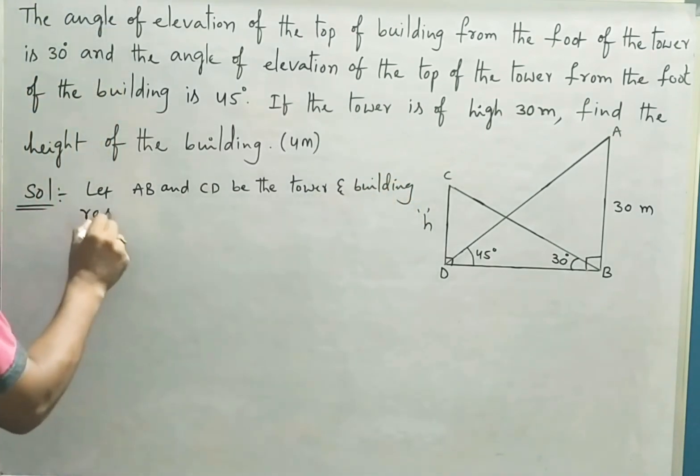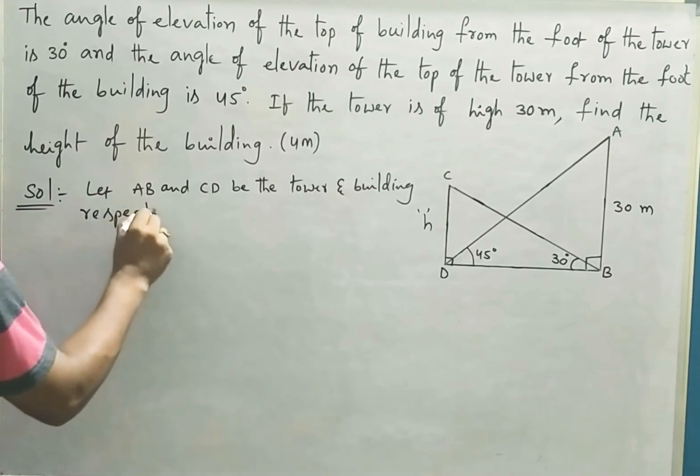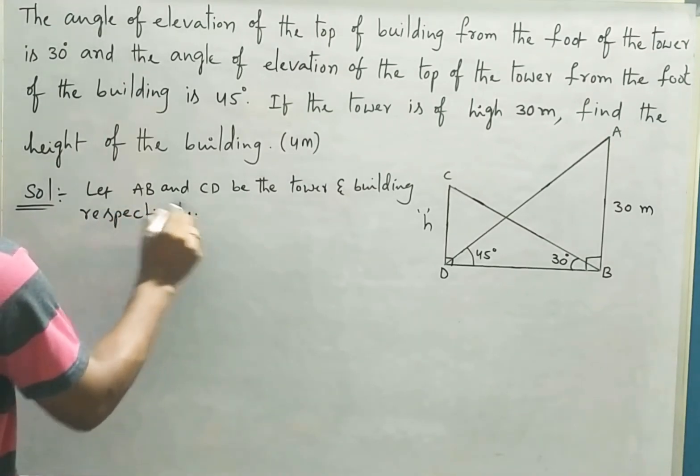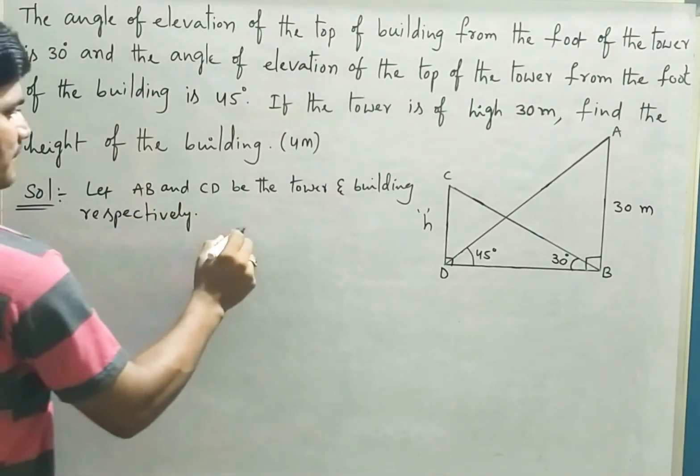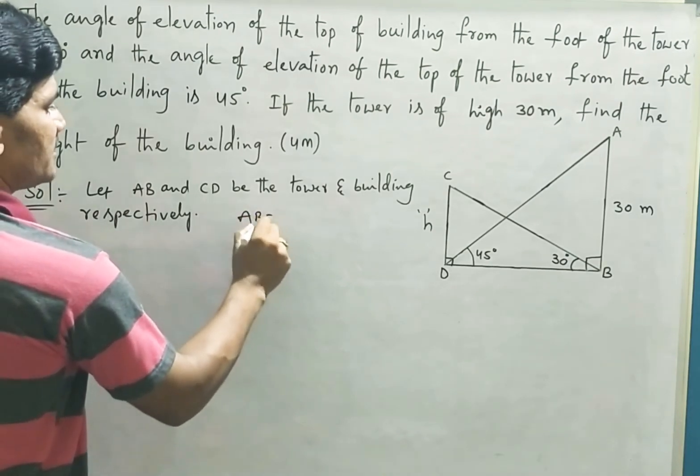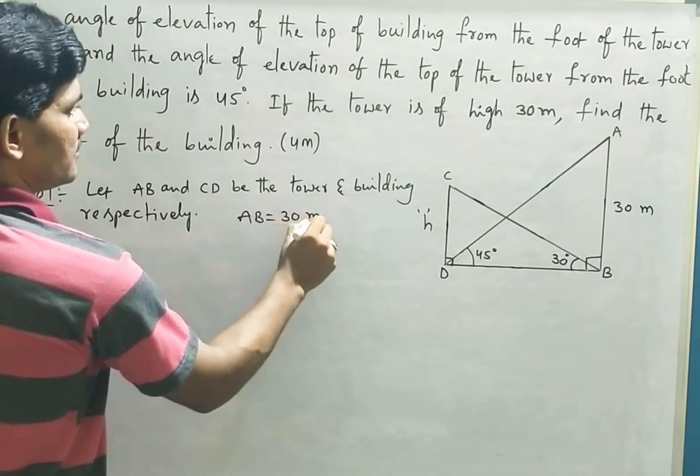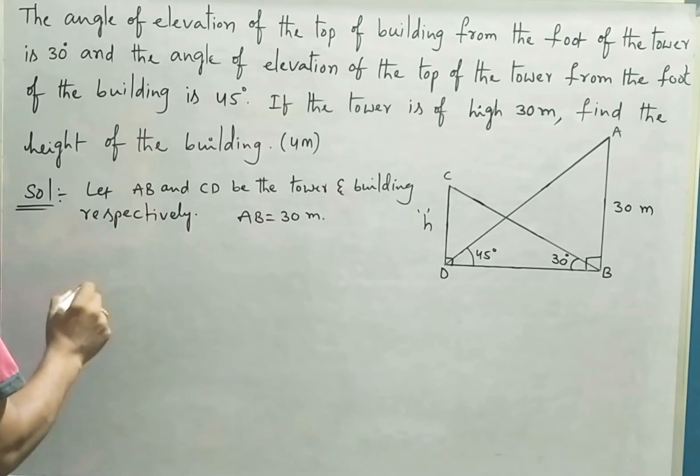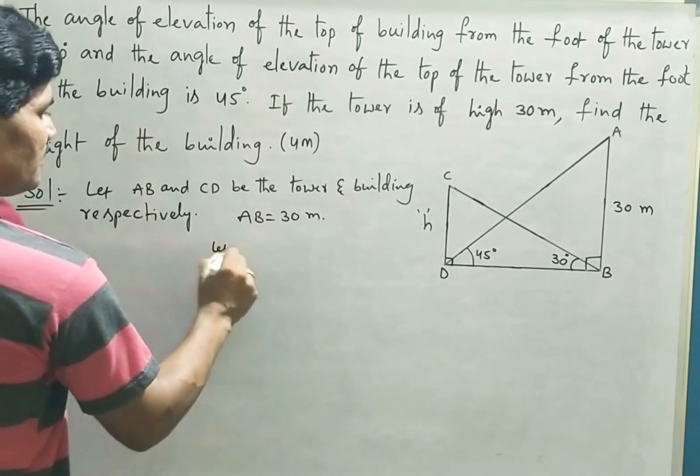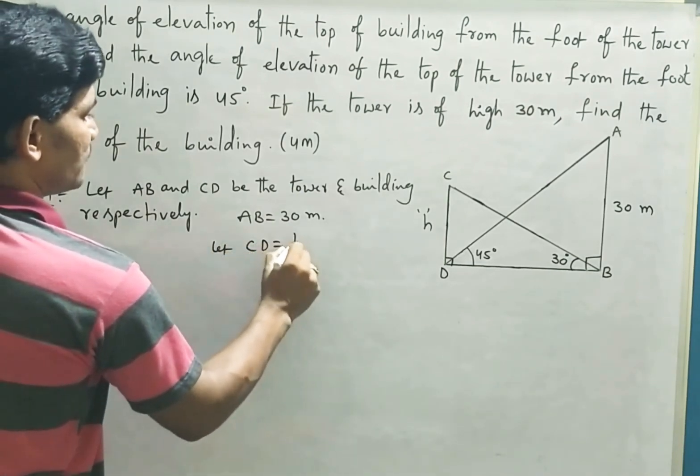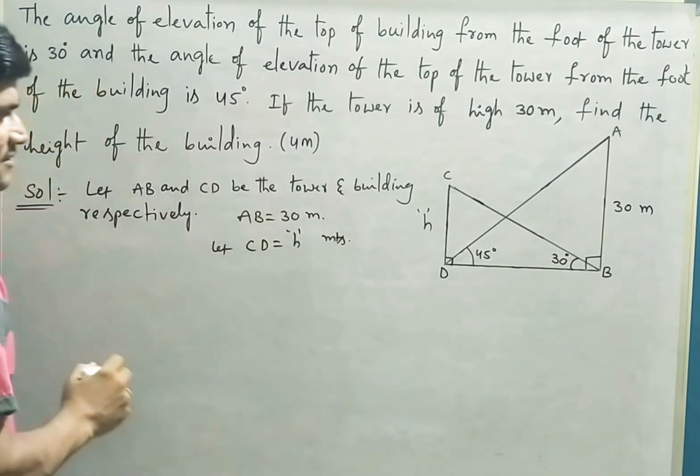Let AB and CD be the tower and building respectively. You are given that the height of the tower is 30 meters, and let CD equal some h meters.